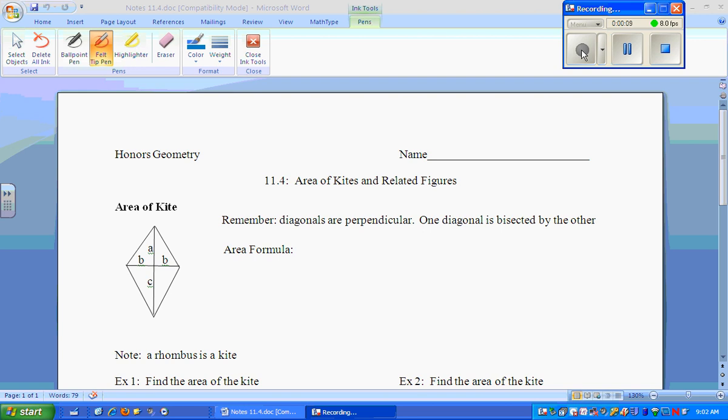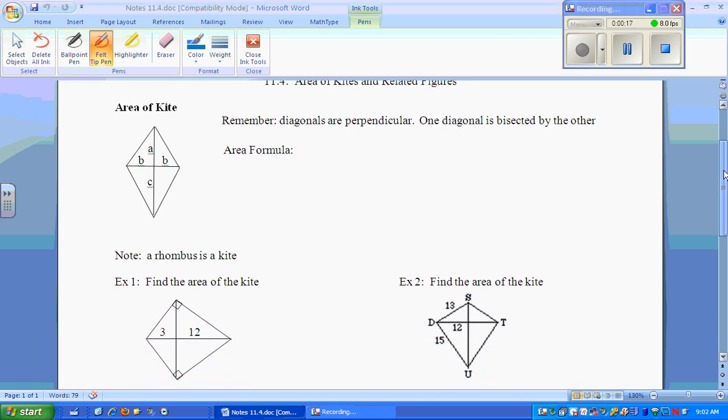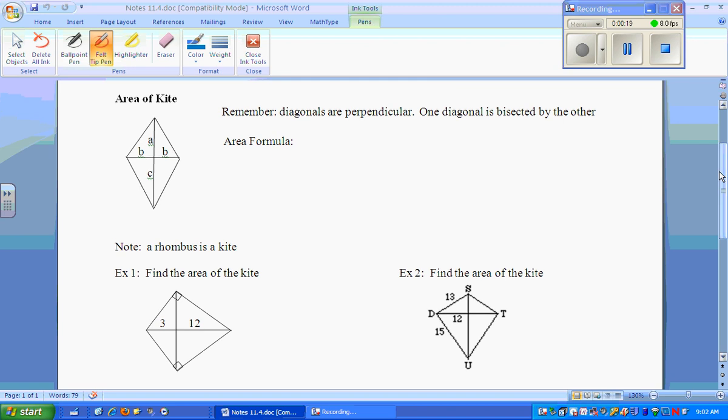A related figure to a kite would be something like a rhombus. If you don't know the formula for a kite, we're going to derive it. Remember, diagonals are perpendicular because they have a perpendicular bisector. One diagonal bisects the other.